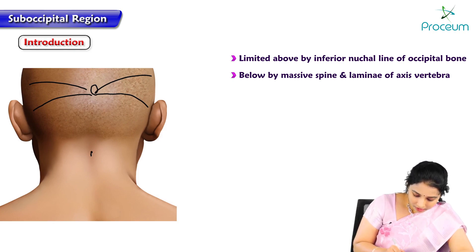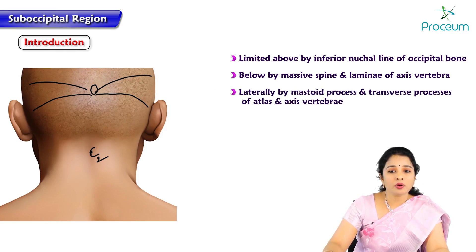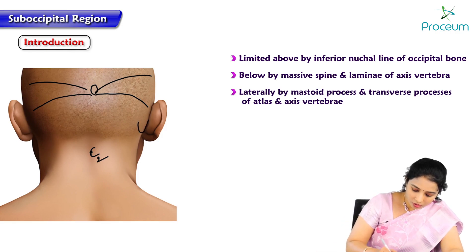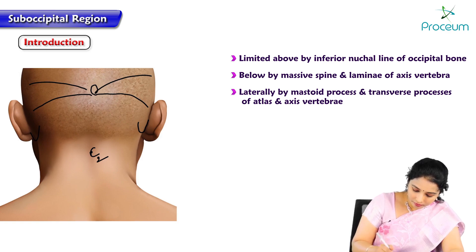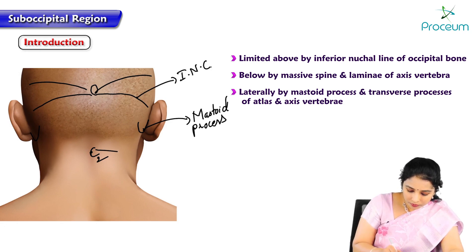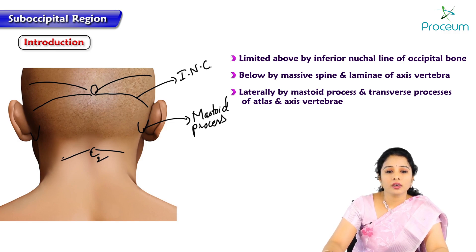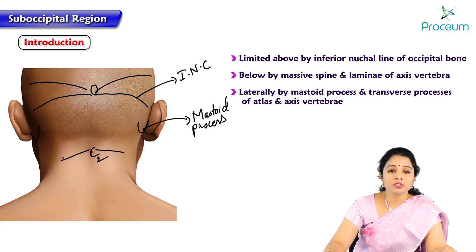Here would be the second cervical vertebra, or C2 axis. Laterally it is bounded by the mastoid process, which is located posterior to the ear. Superiorly by the inferior nuchal line, inferiorly by the lamina of C2 on each side, and laterally by the mastoid process and transverse process of atlas and axis as well. These are the boundaries of the suboccipital region.